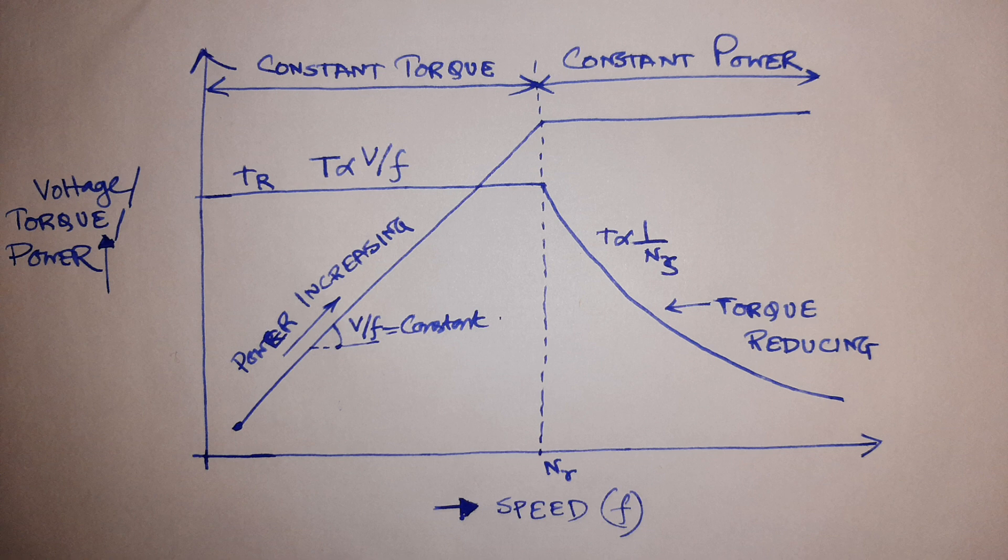In that region we have to keep the V/f constant, voltage by frequency ratio constant. Now torque is also equal to V/f, so in this region as the V/f is kept constant, the torque is also constant. Constant torque is delivered. This is the basic fundamental of how a VFD is used to reduce the power consumption